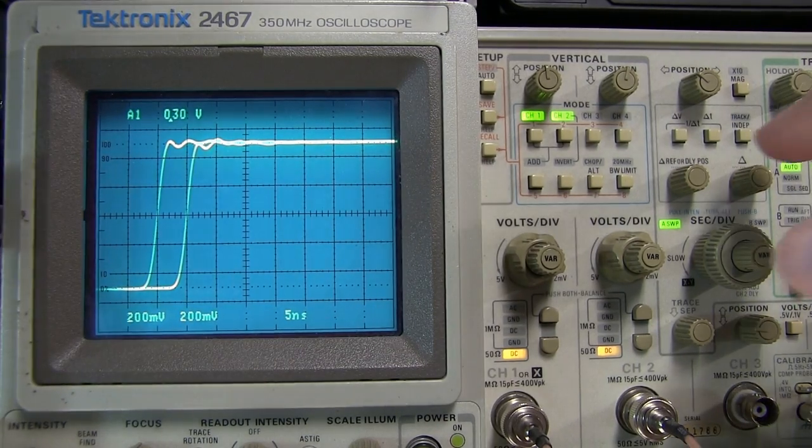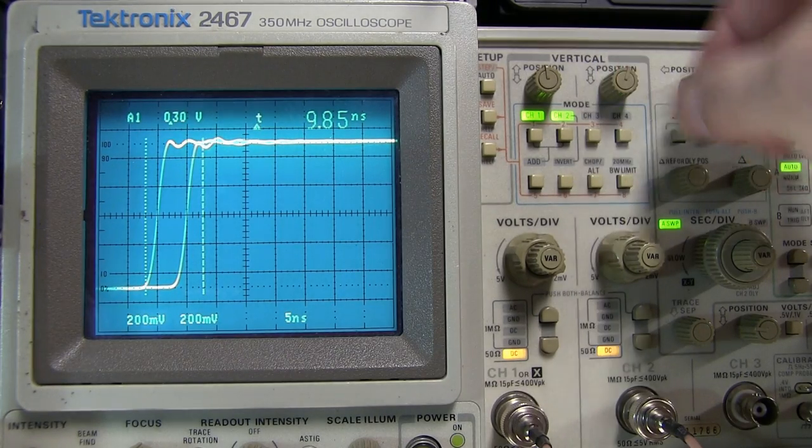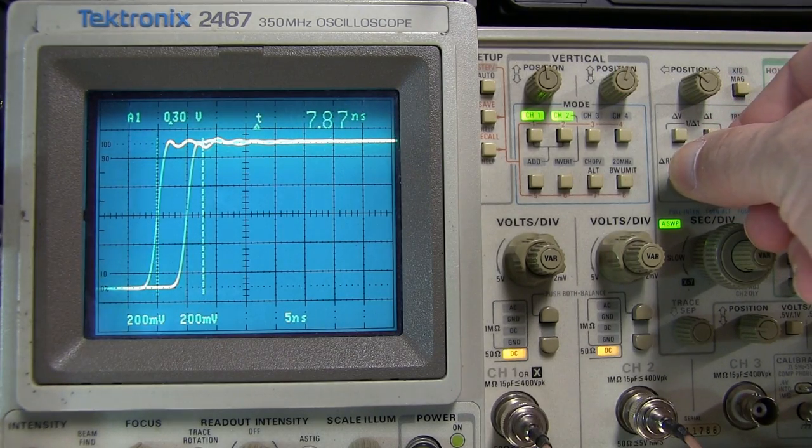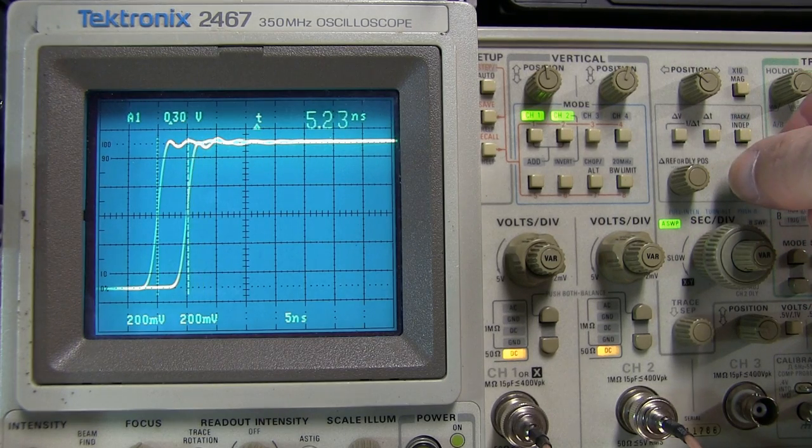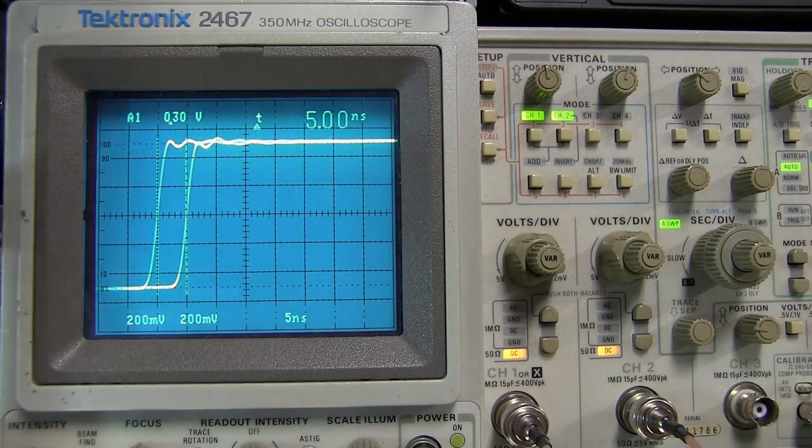Now of course if your scope has got cursors, we can turn those on and adjust the position of those two cursors to be at the crossing points of the waveform, and therefore make that measurement again, in this case right at 5 nanoseconds.